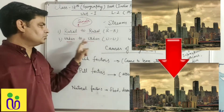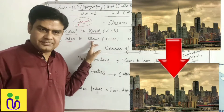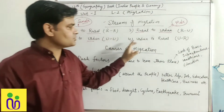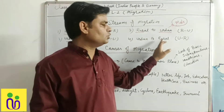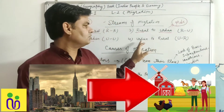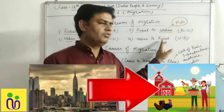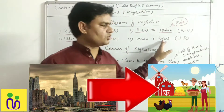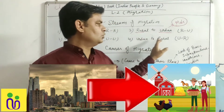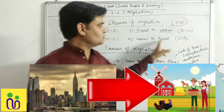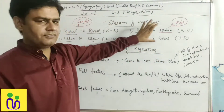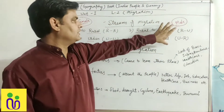Next one is urban to urban — when a person moves from one city to another city, it's called urban to urban migration. And next one is urban to rural — when a person moves from city to village, it's called urban to rural migration. So these are the four streams related to migration.